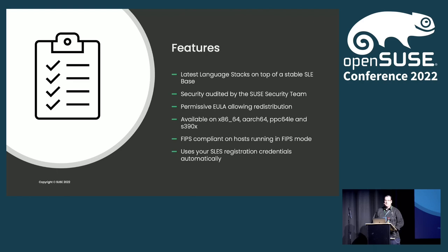As is the fashion for SLES, these container images are available for our four major architectures: x86-64, ARM, PowerPC, and IBM Z systems (S390X architecture). Our containers are also FIPS compliant if the host is running in FIPS mode, so those special use cases are covered. Additionally, if you have a registered system with a subscription, your SLES credentials are automatically used.